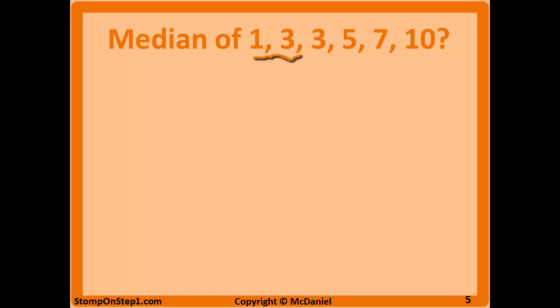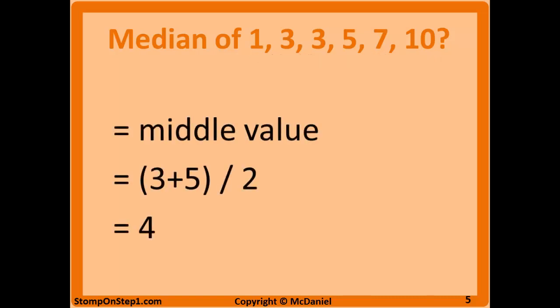What would be the median of these six values? You look for what's in the middle since they're already arranged in ascending order. This is a data set with an even number of values, so there's no middle value. You take the average of the two middle values. The average of 3 and 5 is 4.